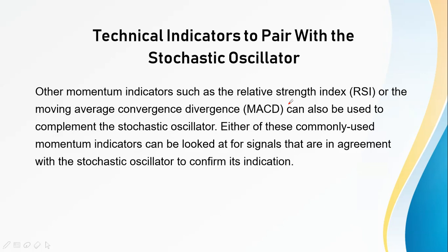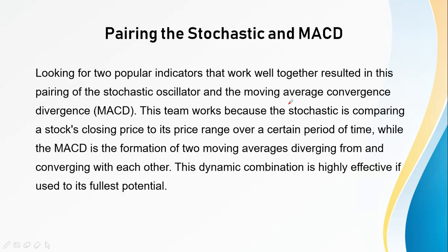Other momentum indicators such as the Relative Strength Index (RSI) and the Moving Average Convergence Divergence (MACD) can also be used to complement the stochastic oscillator. Either of these commonly used momentum indicators can be checked for signals that are in agreement with the stochastic oscillator to confirm its indication.